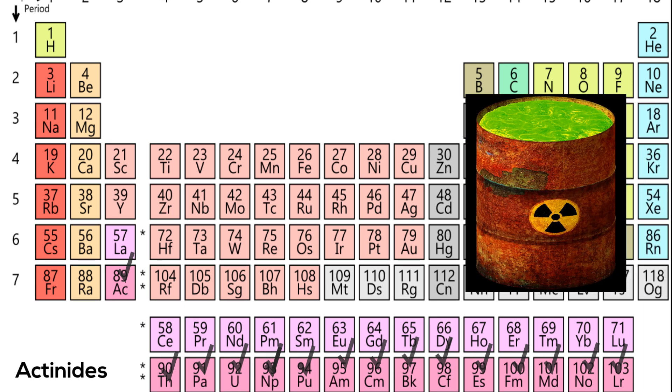Elements listed after plutonium, which is element 94, do not occur in nature. They have been made in the laboratory.